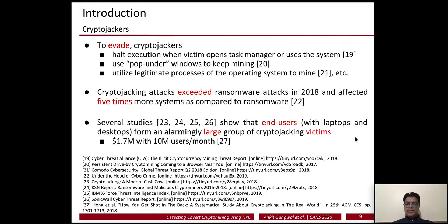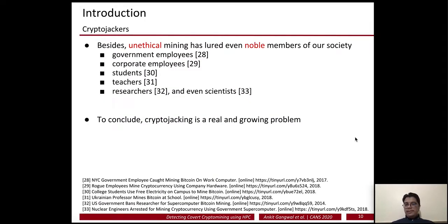The authors in citation number 27 estimated that a website with just 10 million users per month was making around 1.7 million dollars a month, and in their study they considered other websites with many times more users — this gives an idea about the scale of this problem. Unethical mining has lured even noble members of our society, attracting students, teachers, government employees, corporate employees, researchers, and even scientists, which is a very sad thing to observe.